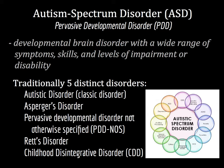Asperger's syndrome, first identified by Viennese psychologist Hans Asperger in 1938, was the diagnosis for high-functioning autistic people. PDD-NOS was the diagnosis given to individuals who didn't easily fit an autism disorder or Asperger's diagnosis — for instance, because they might not acquire language at all.